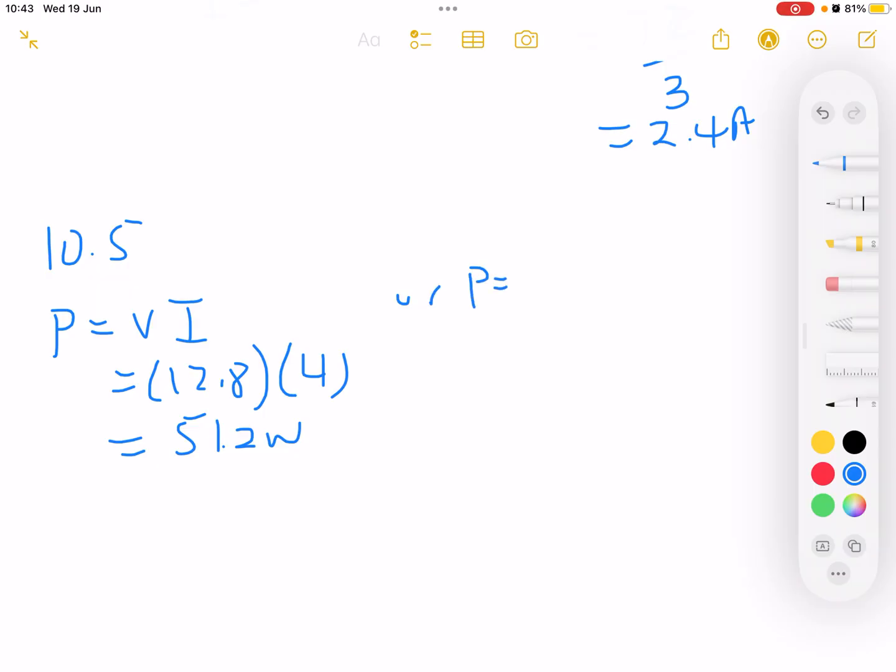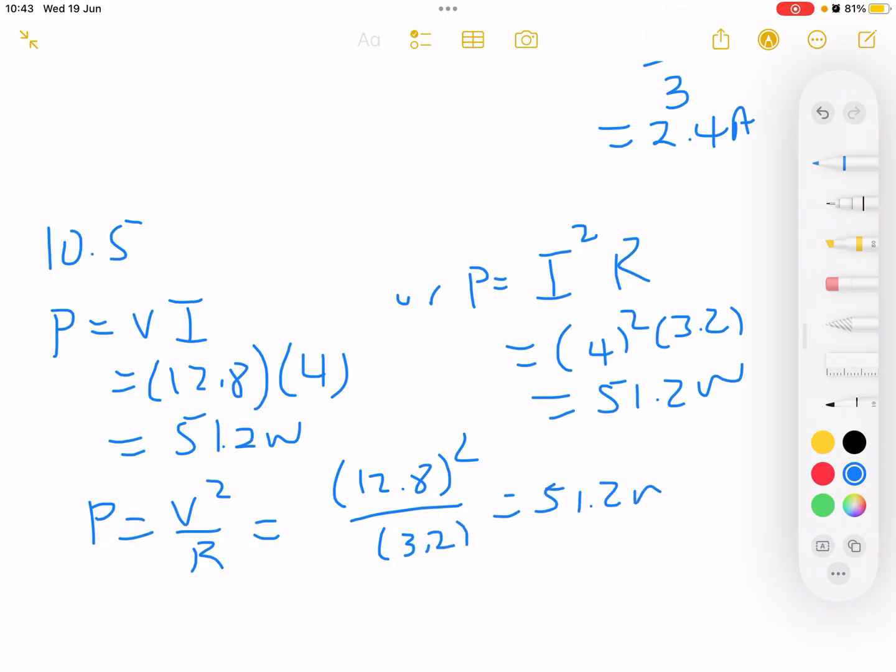You can also calculate it by P equals I squared R. Because you know the current is 4 squared, and the resistor is 3.2 ohms, you get 51.2 watts. Also, you can say P equals V squared over R, which equals the voltage 12.8 squared divided by the resistor of 3.2, you get 51.2 watts.